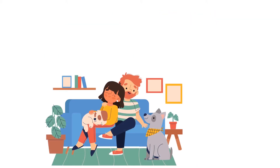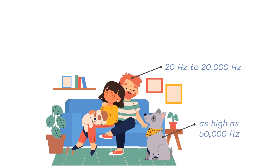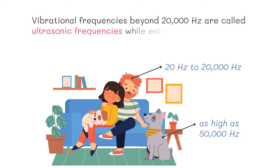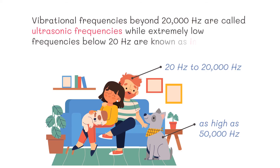Did you know? The human ear can only sense within the frequency range of 20 Hz to 20,000 Hz. Many animals can hear sounds that are well beyond the range of human hearing. For example, dogs can hear sounds as high as 50,000 Hz, while bats can detect as high as 100,000 Hz. Vibrational frequencies beyond 20,000 Hz are called ultrasonic frequencies, while extremely low frequencies below 20 Hz are known as infrasonic frequencies.